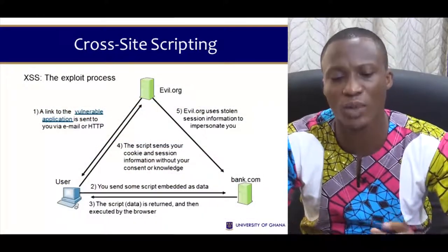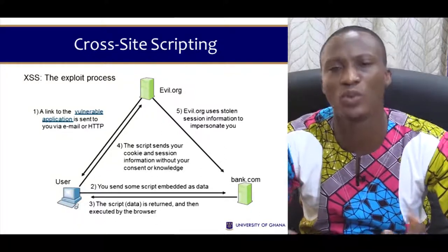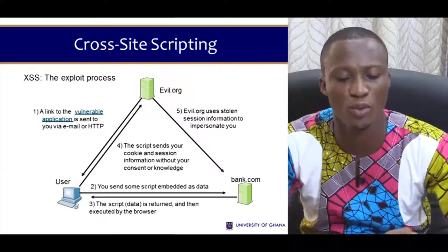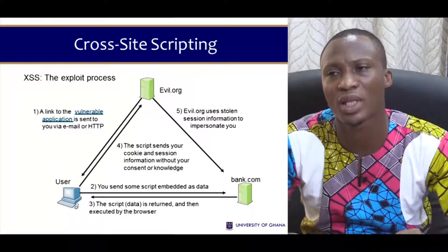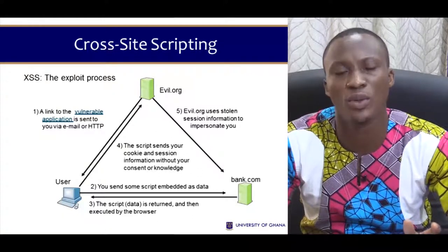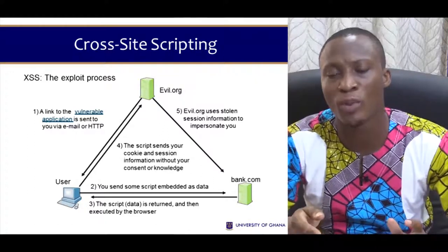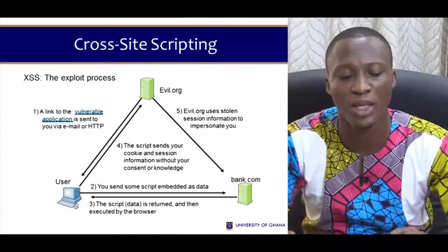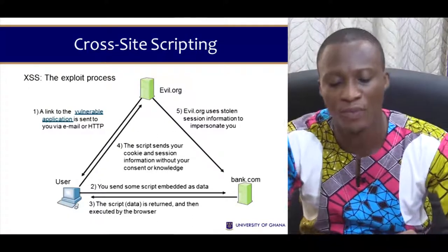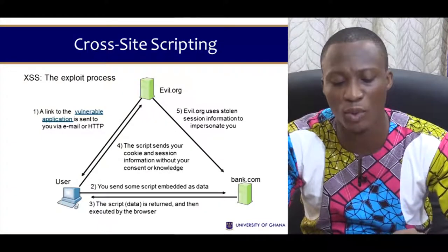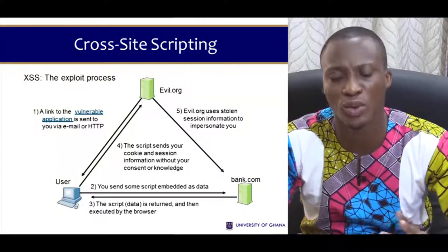What is the typical process of cross-site scripting? A link to a vulnerable application or site is sent to your email via HTTP. You receive those emails in the form of spam — for example, evo.com or evo.org is the application sending the vulnerable email. Once it reaches the user, the user responds to this email, sending credentials — such as a username and password — embedded as data.